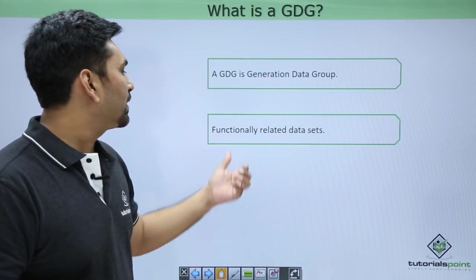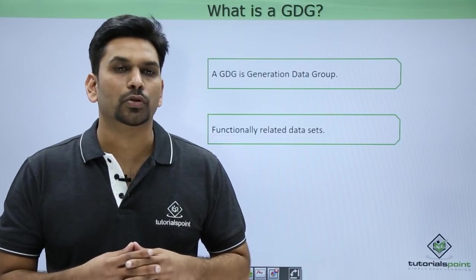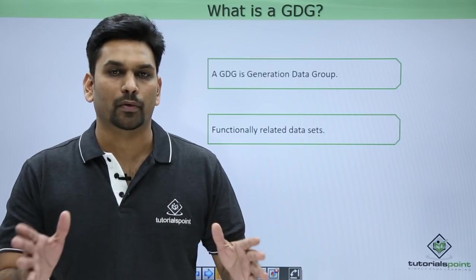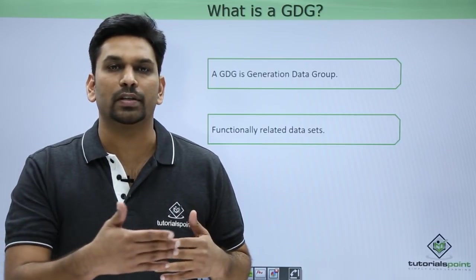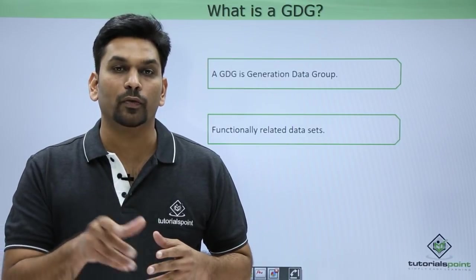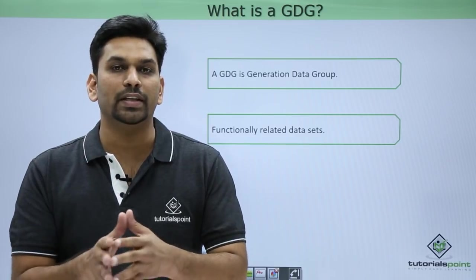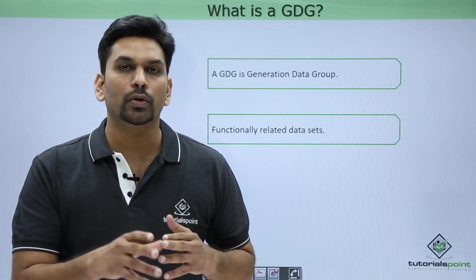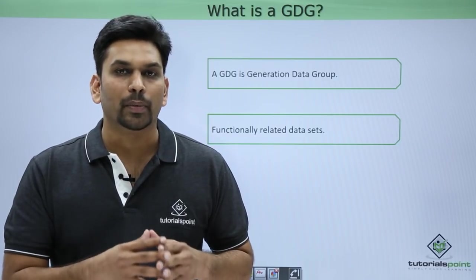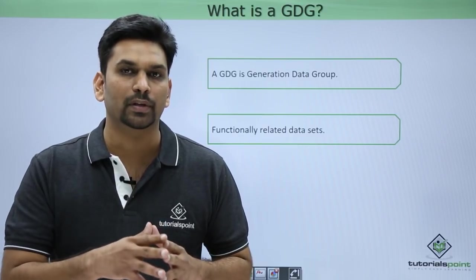GDG is a Generation Data Group and they are functionally related data sets. For example, suppose you are creating a file in production - an output file with a given name. It's a PS file, a physical sequential file. The next day the same job will run and it will say the data set has already been created. In this scenario, every day you need to go to JCL and change the name.